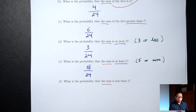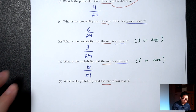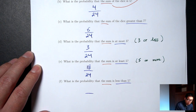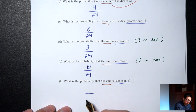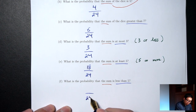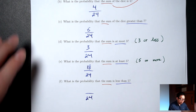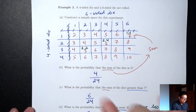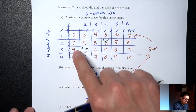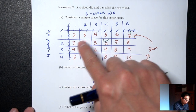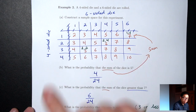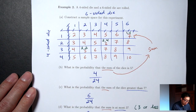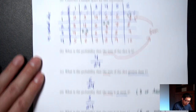Part F: what's the probability that the sum is less than 5? Bottom is 24. Less than 5 would be the 4s, 3s, and 2s — remembering not to count the numbers on the outside. That's 6 outcomes. Probability is 6/24.